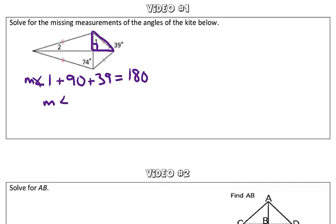To solve this, we're going to combine our like terms. So the measure of angle 1 plus 129 is equal to 180. Using inverse operations to solve for the measure of angle 1, we're going to subtract 129 from both sides. So the measure of angle 1 is equal to 51 degrees.